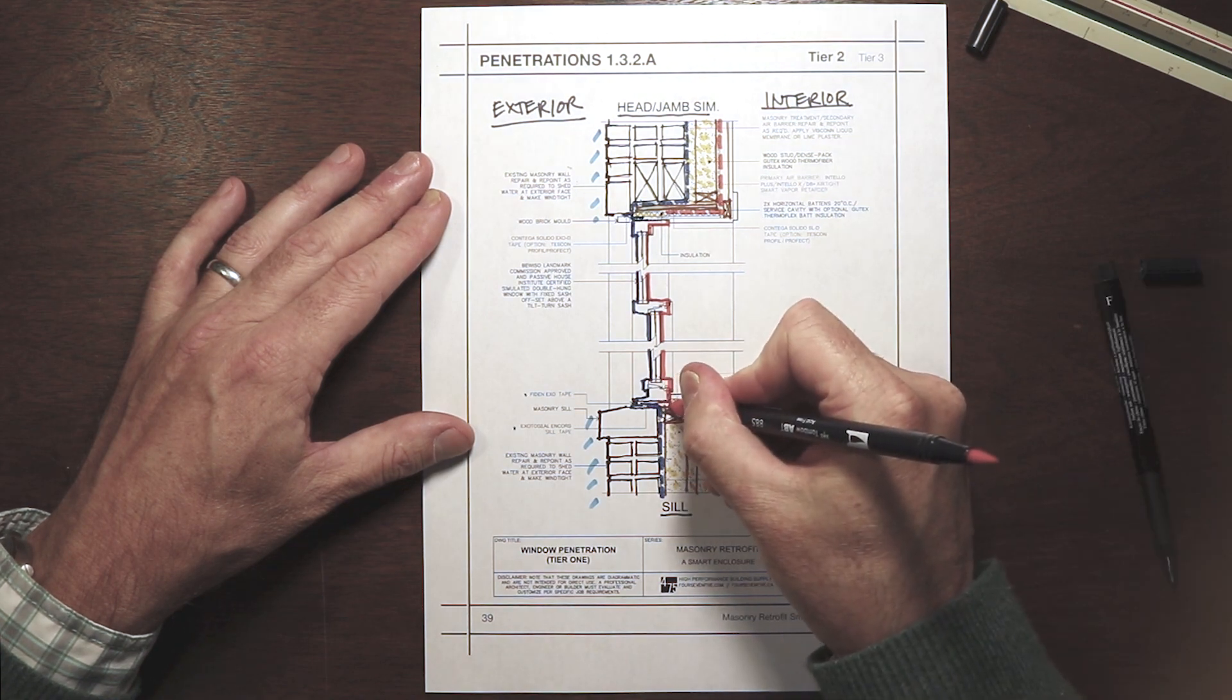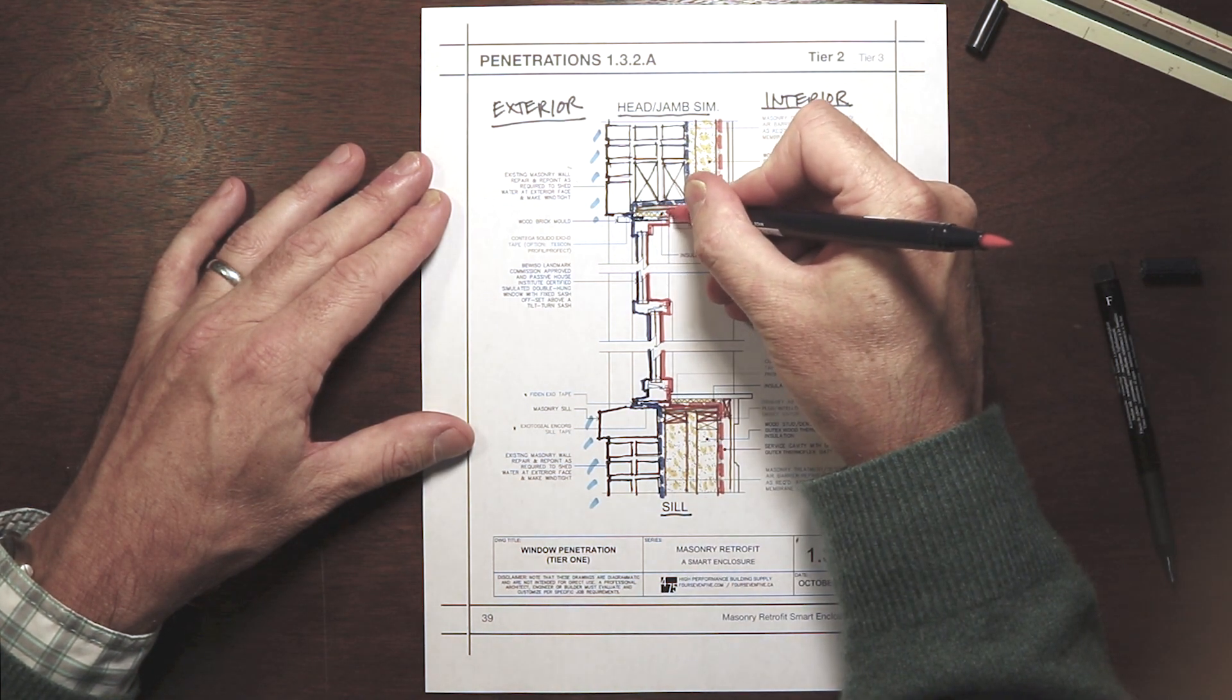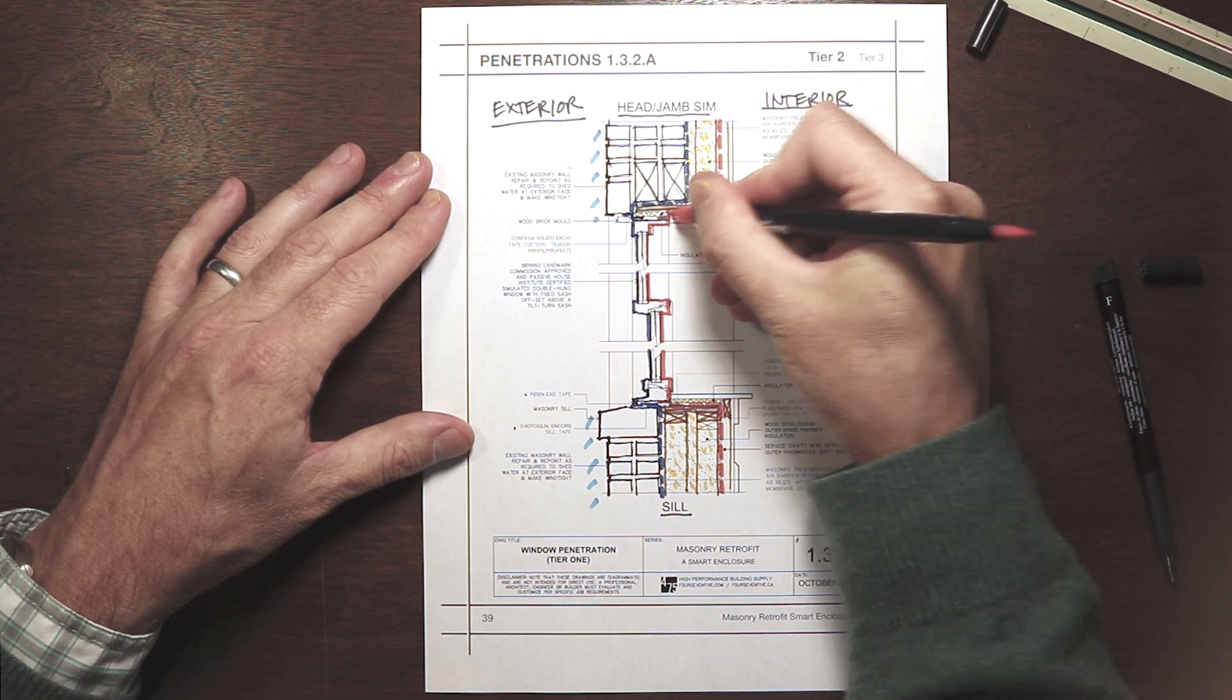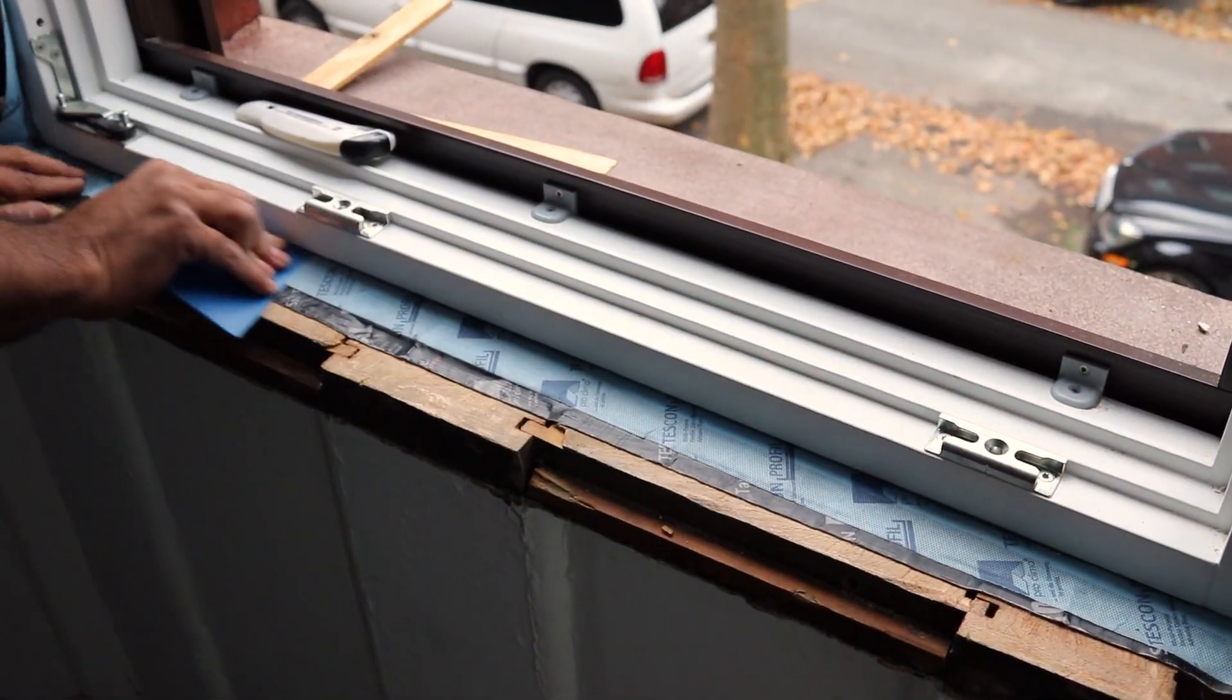To the interior, the primary air barrier is connected to the window with Contiga Solido SL, blind taping, or Tescon Proful or Profect with face taping.